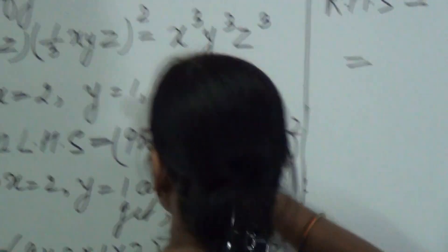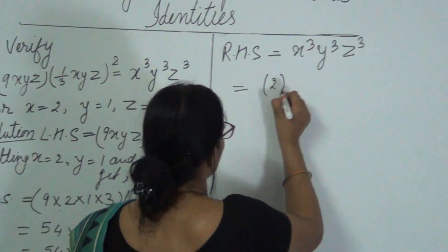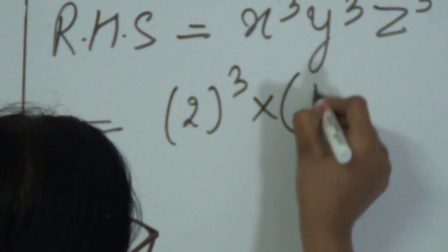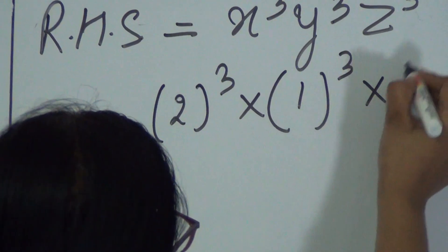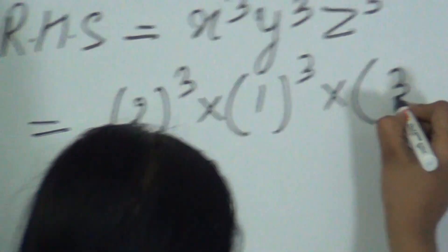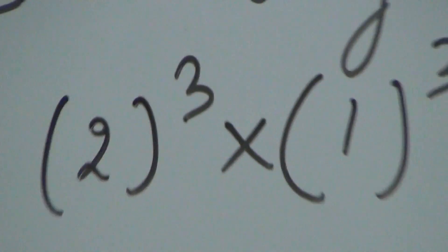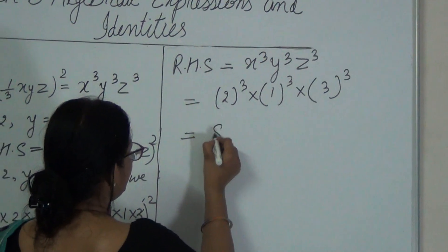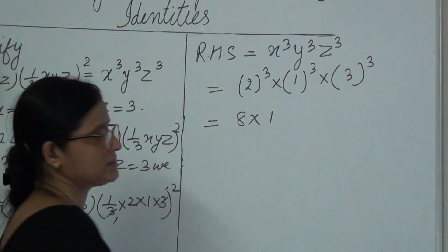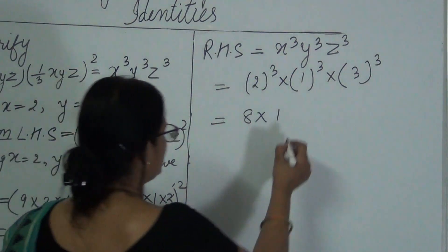And hence we have X is 2, so 2 cube into Y is 1 cube and Z is equal to 3, 3 cube. 2 cube gives us 8, 1 cube is 1 and 3 cube is 27.